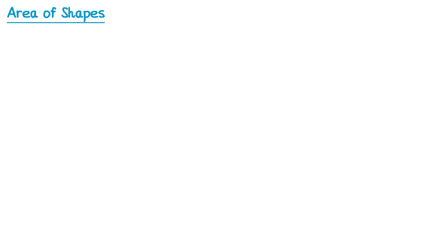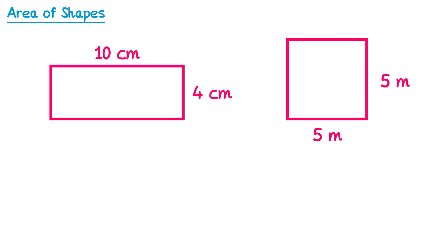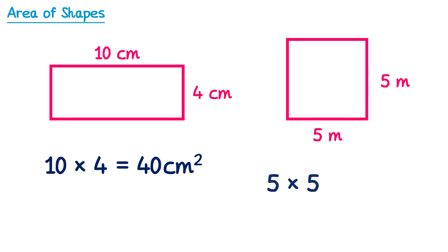Here are two more rectangles that you might want to try and find the area for. Feel free to pause the video and give it a try first. For the first rectangle on the left hand side, we would do 10 times 4, which is 40, and the units would be centimeters squared. For the one on the right, we have a square. We would do 5 times 5, which is 25, and this time the units would be meters squared.